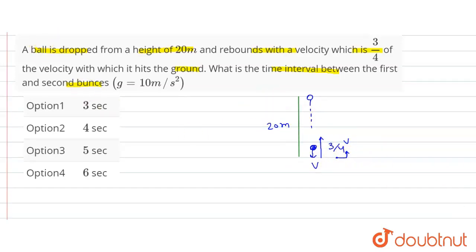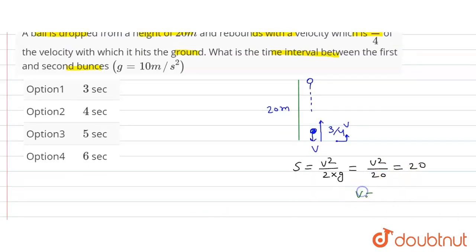So see here, we know s is equal to v squared upon 2g. So v squared upon 2g, that is equal to 20. S is how much? 20.